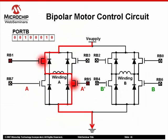To change direction through winding A, we need only change the MOSFETs activated. In this example, MOSFET gates connected to port B pins 5 and 1 are driven high and current flows from left to right across the winding. Winding B direction is controlled in the same fashion.